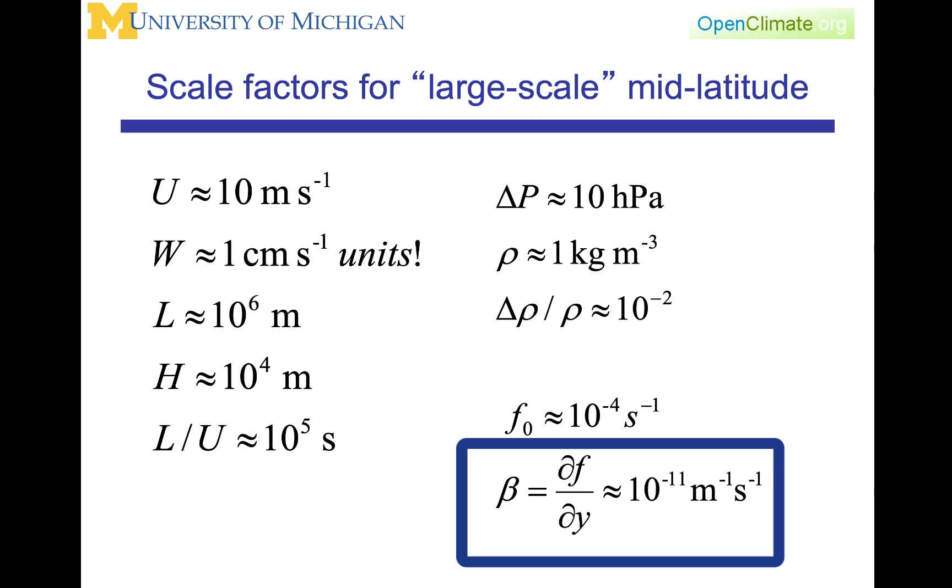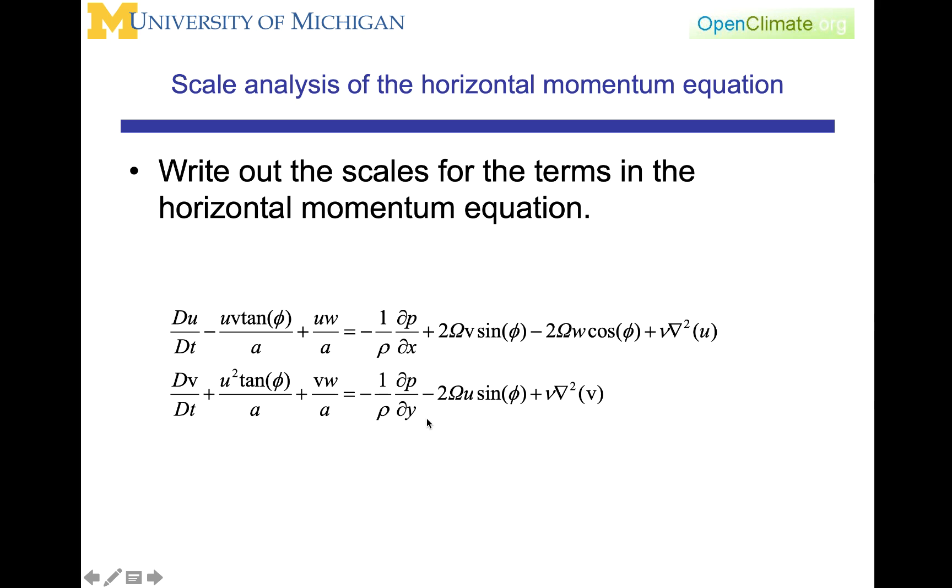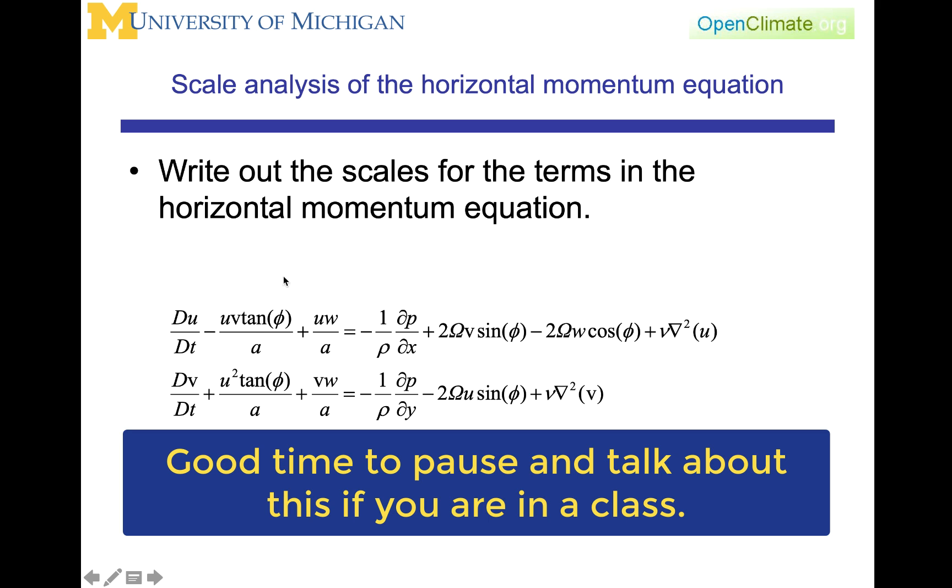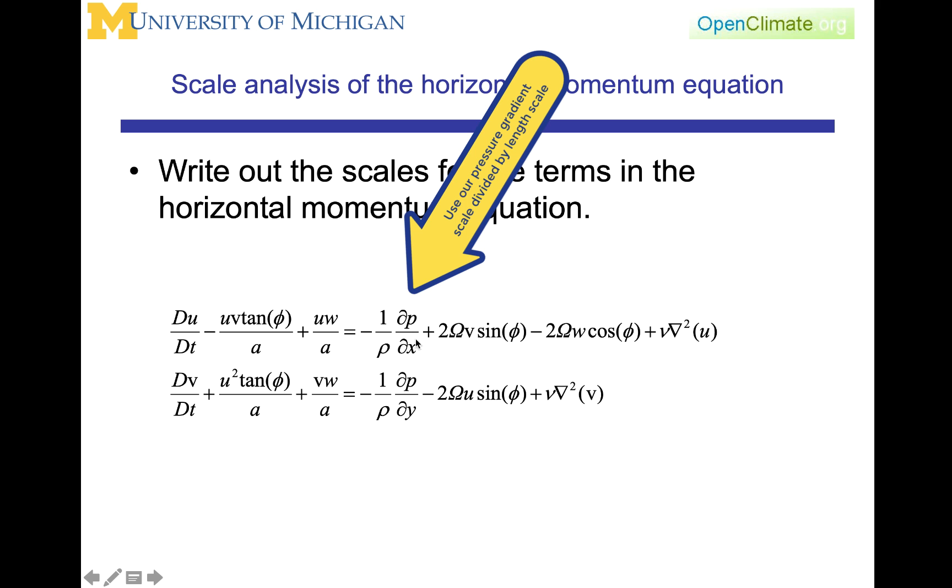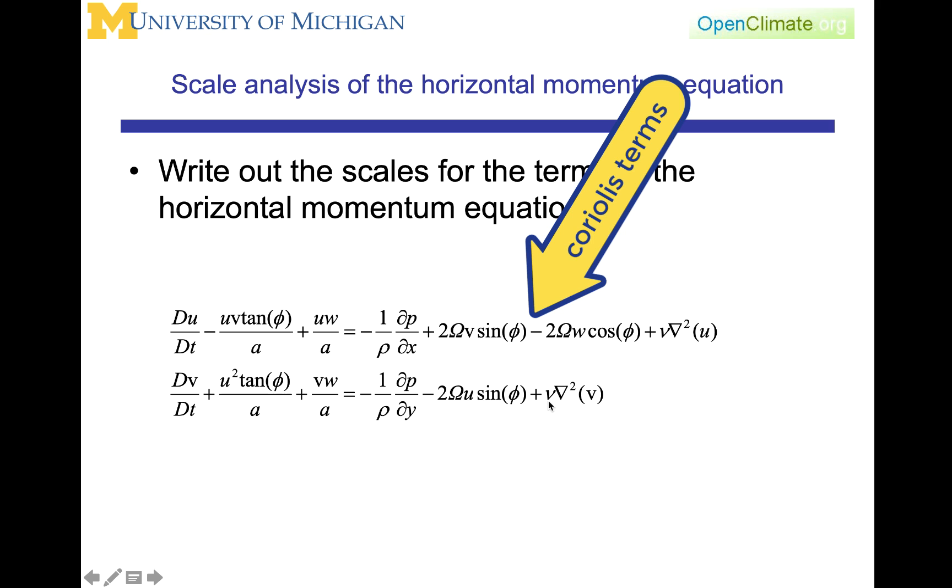So the exercise now is to write out the scales for the terms in the horizontal momentum equation. So how would we do this? We would take a term like this, the uw over a, which is a relatively straightforward term, and the substitution would be your horizontal velocity u, your vertical velocity w, divided by a, which is the radius of the earth. This one will be simply what we had on the previous page of the delta P over rho. And we need to make sure that we properly account for a horizontal length scale here, which will be L. And then this will be the Coriolis term, and then we will have terms here for nu.